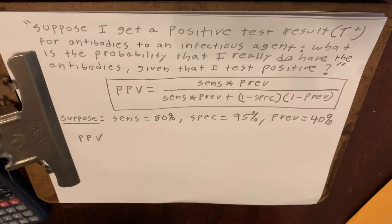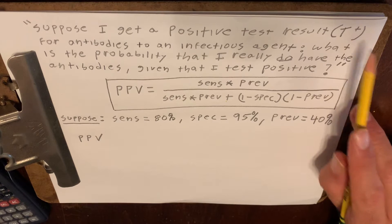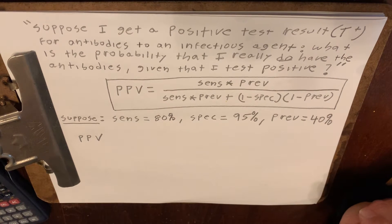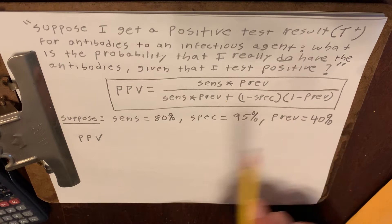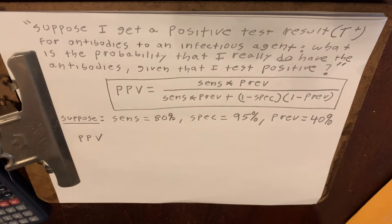Suppose I get a positive test result — which I'm going to call T with a superscript plus — for antibodies to an infectious agent, say a respiratory infection. What is the probability that I really do have the antibodies, given that I test positive?